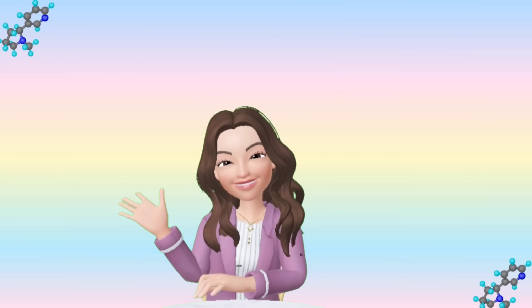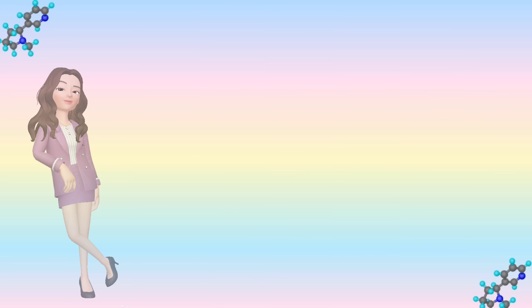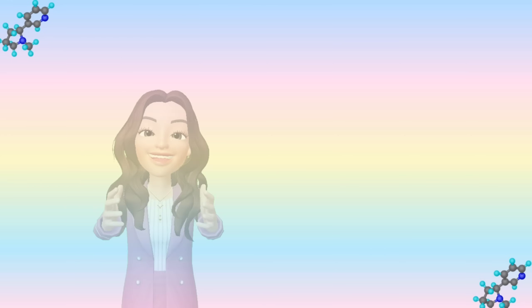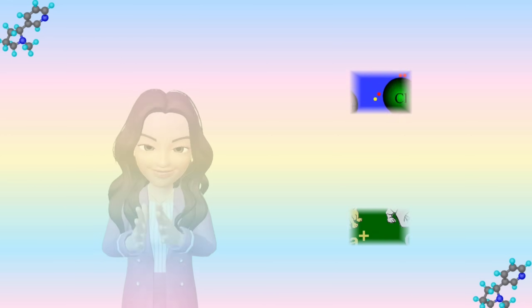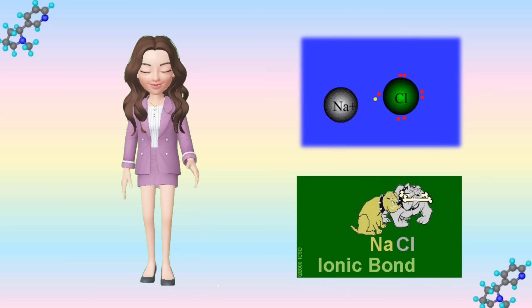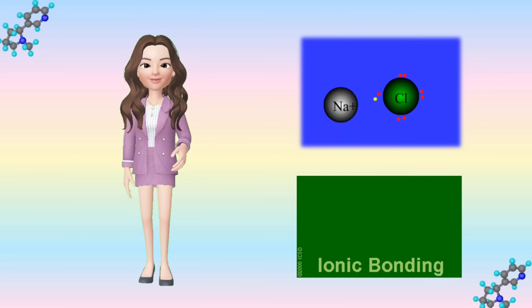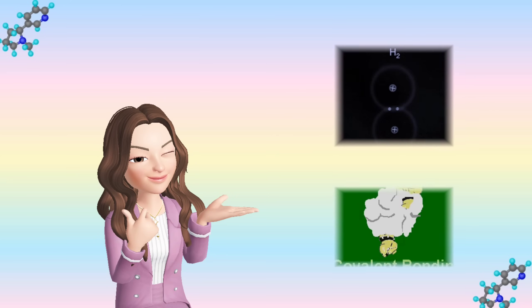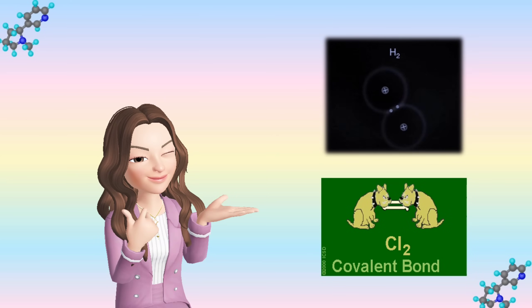Good day everyone. In our previous topic we talked about how atoms become stable through chemical bonding. We also talked about ionic bond and covalent bond. For the recap: ionic bond is the attraction between metal and non-metal and involves transfer of electrons, while covalent bond is the attraction between non-metals and happens through sharing of electrons.